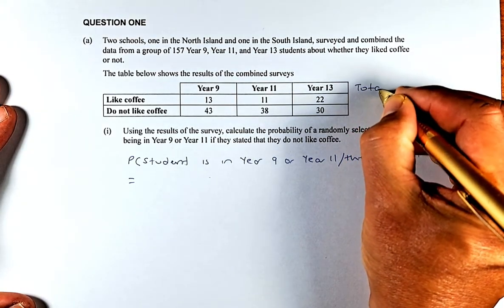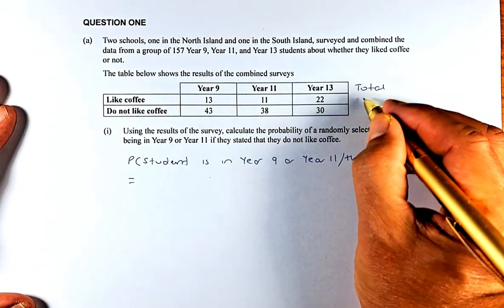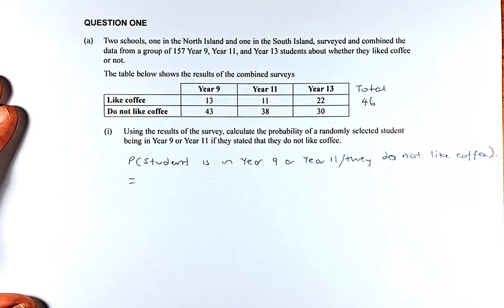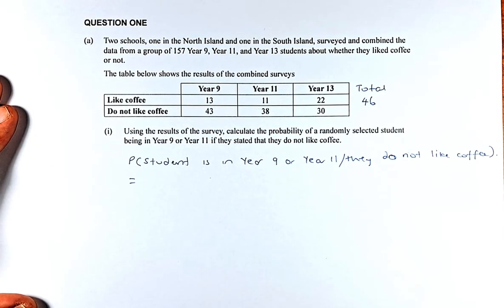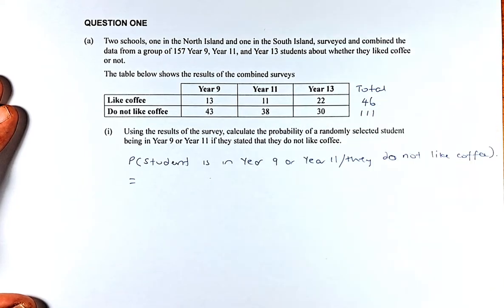We're going to add 13 plus 11 plus 22 and the answer is 46. So 46 students like coffee. On the other hand, for do not like coffee, you're going to add 43 plus 38 plus 30 and the answer is 111.